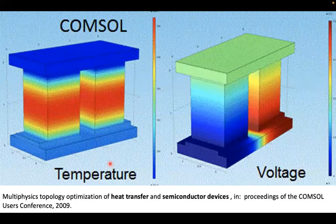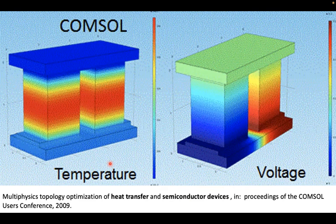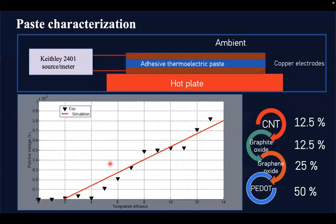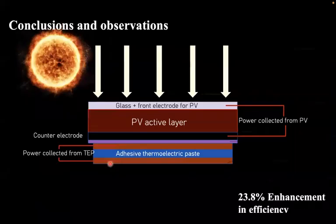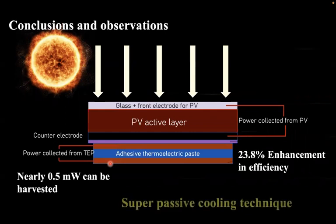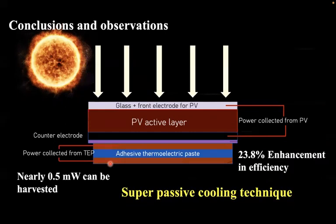For simulation, we used COMSOL Multiphysics, which supports both a heat transfer module and a semiconductor module. We compared experimental data with simulation data. The final result was that we enhanced the output power of our solar cell by about 23.8% and extracted nearly 0.5 milliwatt per solar cell as additional power from the thermoelectrical harvester.